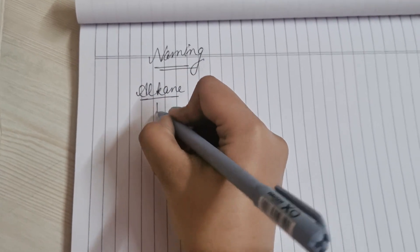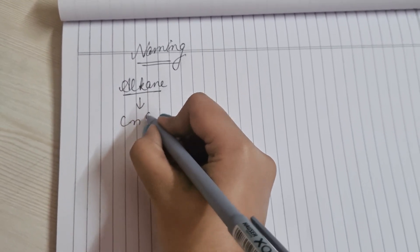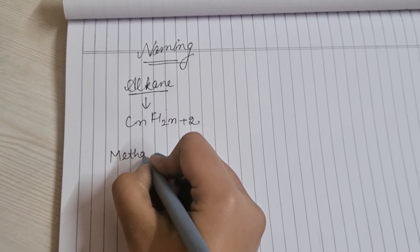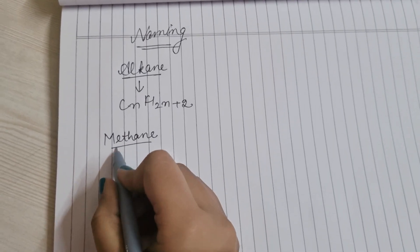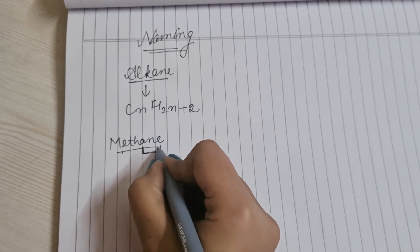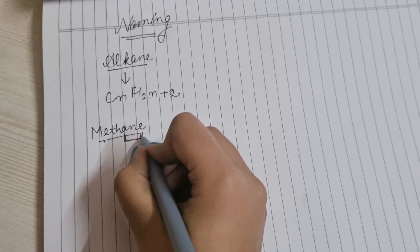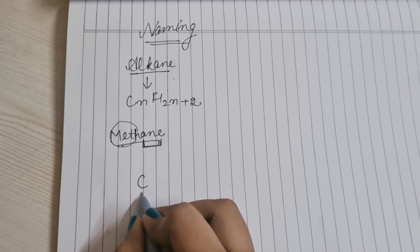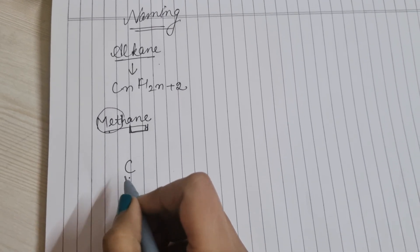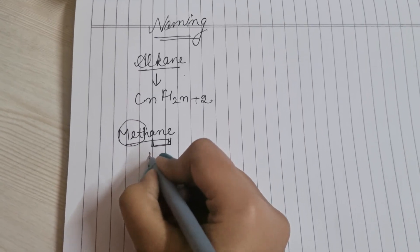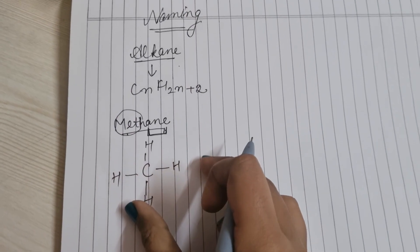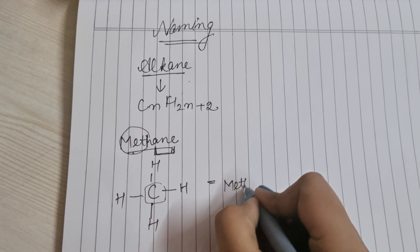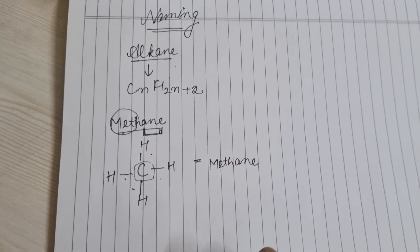Alkane के बारे में: यह saturated compound है, formula CnH(2n+2)। जैसे methane — carbon number 1 है, तो 'meth', और single bond है तो 'ane' — methane। Carbon की valency 4 होती है, इसलिए 4 hydrogen लगाएंगे। यह methane का structure है।